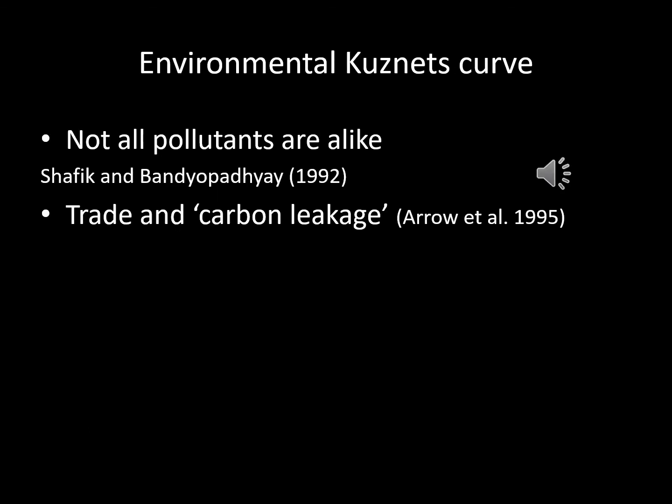Apart from the possibility that we find ourselves on different parts of the environmental Kuznets curve for different pollutants, there are other difficulties to keep in mind. Perhaps most importantly, suggestive evidence in favor of an environmental Kuznets curve from cross-country comparisons can easily be the result of a competing race to the bottom, or pollution haven hypothesis, where high-income countries export their polluting activities to low-income regions. Arrow et al. reminds us that the observation of an inverse-U relationship between pollution and income could easily be the result of trade rather than a reduction through policy or technological development.